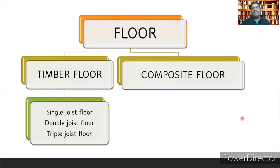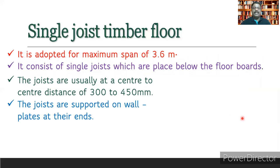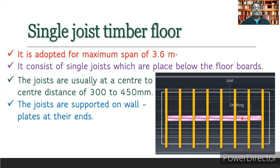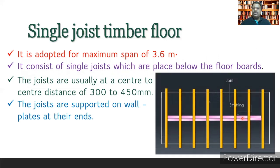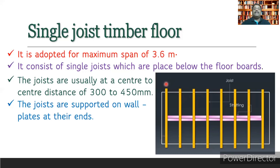Timber floors are classified as single-joist, double-joist, and triple-joist floors. In a single-joist timber floor, the spacing of joists is typically 300 to 450 mm, or 30 to 45 cm.